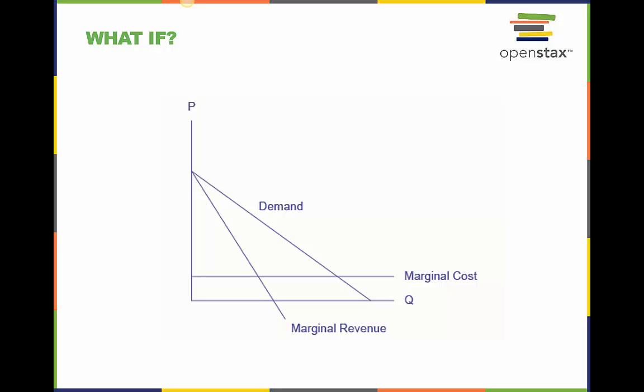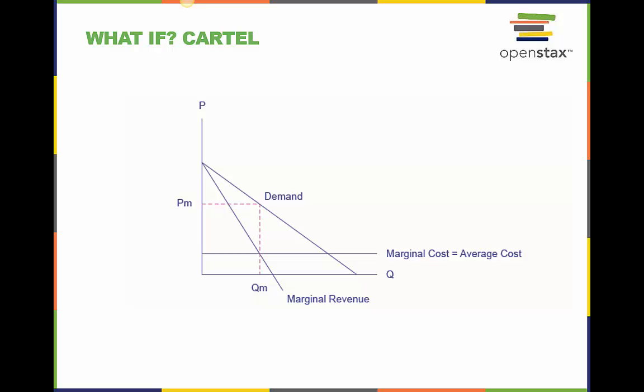Consider this graph, which shows the market demand, marginal cost, and marginal revenue curve for firms in an oligopolistic industry. In this example, we assume firms have zero fixed costs, so all costs are variable. Suppose the firms collude to form a cartel. What price will the cartel charge? What quantity will the cartel supply? How much profit will the cartel earn?